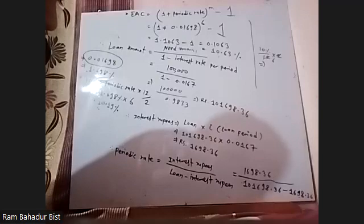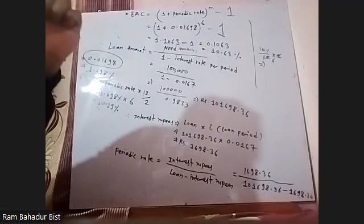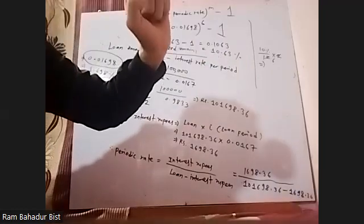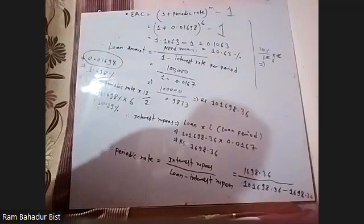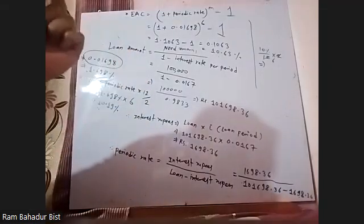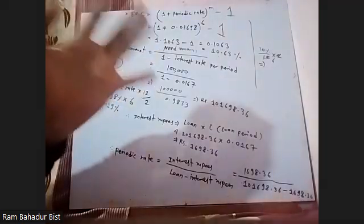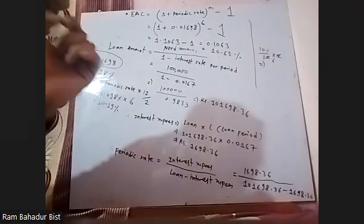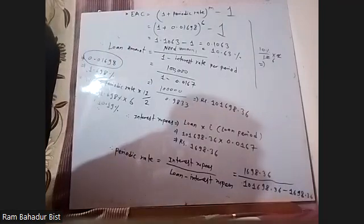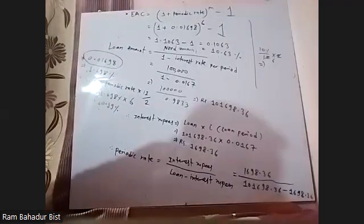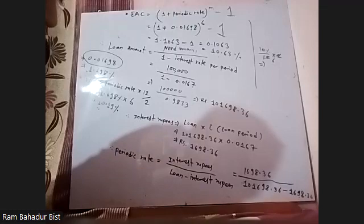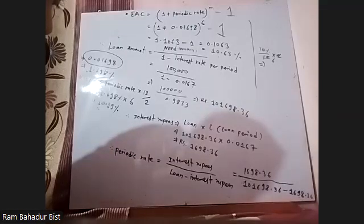The credit term will be 2 by 10, net 30. That means a 2% discount for 10 days, and the credit period will be 30 days. If the delta does not take the discount, when you have a discount, the cost of trade credit does not exist if a discount is not taken. If no discount is taken, the payment period is 40 days. What is the annual percentage cost of accounts payable? Assume 360 days in a year.